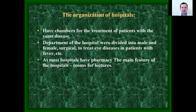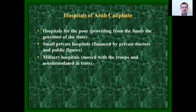Arab hospitals had chambers for the treatment of patients with the same disease. Hospital departments were divided into male and female, surgical, for eye disease, and for patients with fever. Most hospitals had a pharmacy. A main feature of the hospitals was a room for lectures. Hospitals for the poor were provided from the funds of the state governor. There were also small private hospitals financed by private doctors, and military hospitals that moved with the troops and were accommodated in tents.